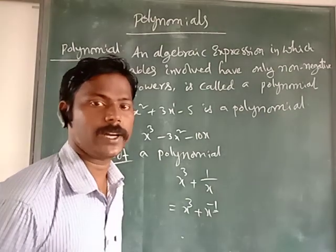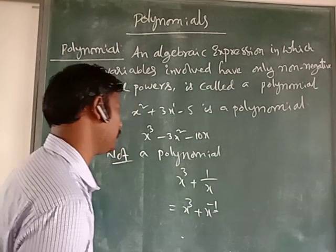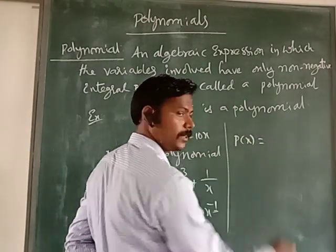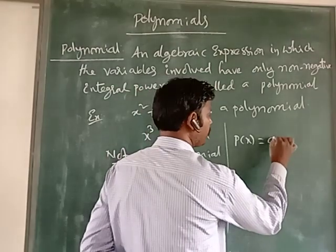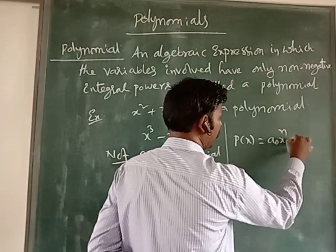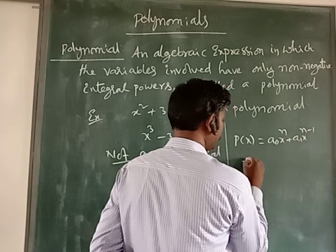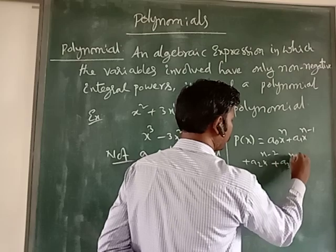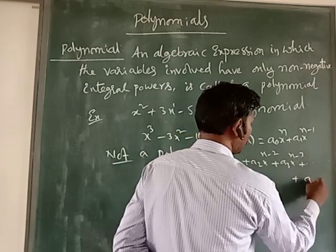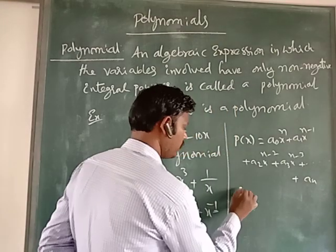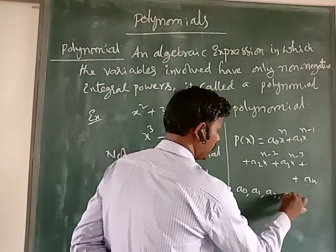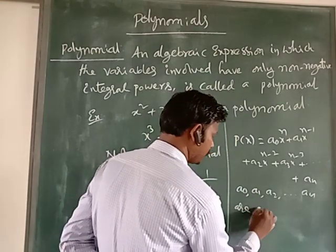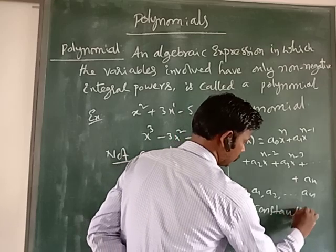So, what is the general formula for a polynomial? General form: if P(x) is a polynomial, we write it as a₀xⁿ + a₁xⁿ⁻¹ + a₂xⁿ⁻² + a₃xⁿ⁻³ + ... + aₙ. Here a₀, a₁, a₂, and so on up to aₙ are constants — they are coefficients, some fixed numbers.